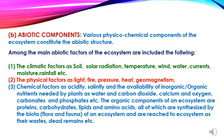The second component is abiotic components — the various physical and chemical components of the ecosystem. The main abiotic factors include: climatic factors such as soil, solar radiation, temperature, wind, water currents, moisture, and rainfall; physical factors such as light, fire, pressure, heat, and geomagnetism; and chemical factors such as acidity, salinity, and the availability of inorganic or organic nutrients needed by plants, like water, carbon dioxide, calcium, oxygen, carbonates, and phosphates. The organic components of an ecosystem are proteins, carbohydrates, lipids, and amino acids, synthesized by the biota — the flora and fauna — and returned to the ecosystem as wastes and dead remains.